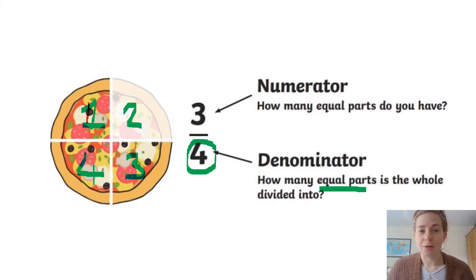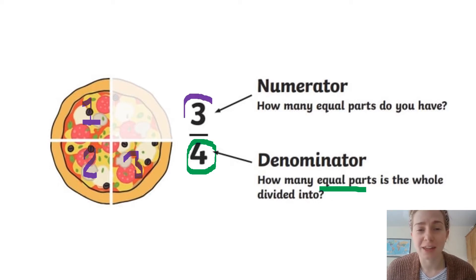Now, it's been divided into 4 parts. But how many parts do you have? Let's count. We have 1, 2, 3. So, our numerator is 3. So, out of the whole pizza, which has been divided into 4 parts, we have 3. So, we read this as, oh, well done everyone, it says 3 quarters.